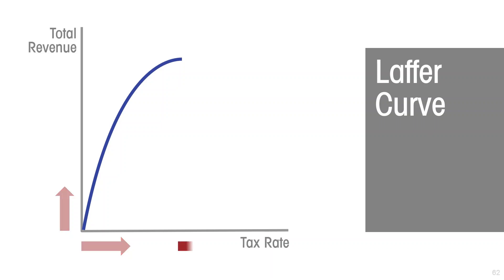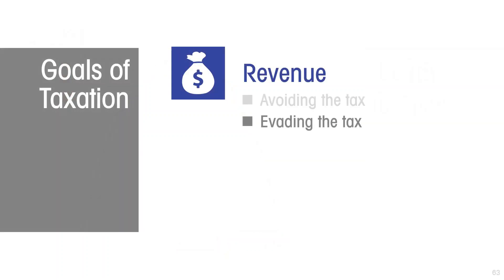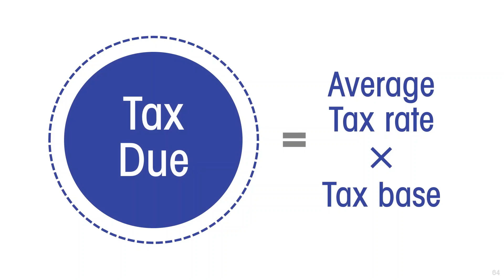When we first impose the tax, revenue goes up, and this continues up to a point. But there comes a point beyond which further increases in the tax rate so discourage the product from being produced and consumed that tax revenue falls. The relationship between the tax rate and total tax revenue ends up being an inverted U shape. This captures the fact that when a tax is levied it discourages people from engaging in taxable activity — the tax is avoided.